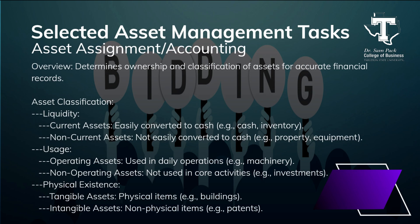Asset assignment in accounting is all about figuring out who owns an asset and what category it falls into. We classify assets based on a few key factors: liquidity — how easy it is to convert the asset into cash (cash is highly liquid, while real estate is less so); usage — how the asset is used within the organization; and physical versus intangible. Tangible assets are physical items you can touch, like computers or furniture. Intangible assets have value but no physical form, like patents or brand reputation. Proper classification ensures that assets are managed effectively and their value is accurately reflected in your records.